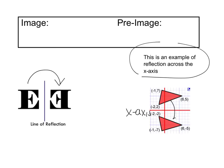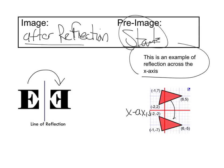Your image is what is the image after reflection. After your reflection, your pre-image is your starting image. So your pre-image is where you start, your image is after the reflection.